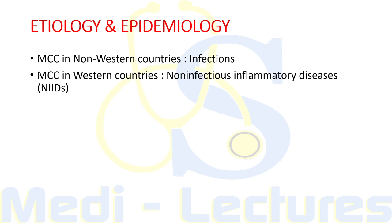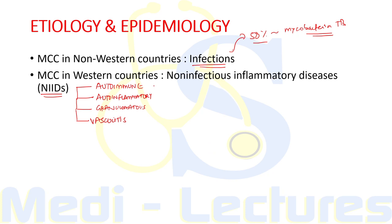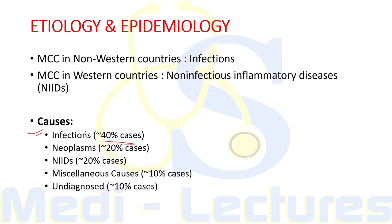The most common cause of PUO in non-western countries continues to be infections, and among those infections almost 50% are due to Mycobacterium tuberculosis. In western countries, non-infectious inflammatory diseases (NIIDs) — including autoimmune diseases, auto-inflammatory diseases, granulomatous conditions, and vasculitis — are the most common cause. Overall, approximately 40% of PUO cases are due to infections, 20% neoplasm, 20% NIIDs, 10% miscellaneous causes, and 10% remain undiagnosed.